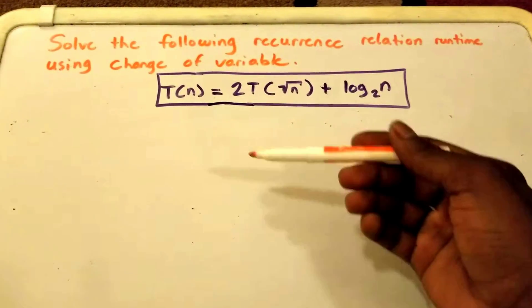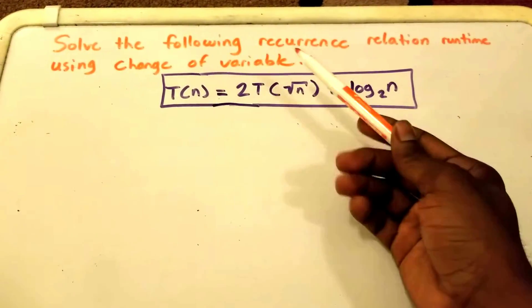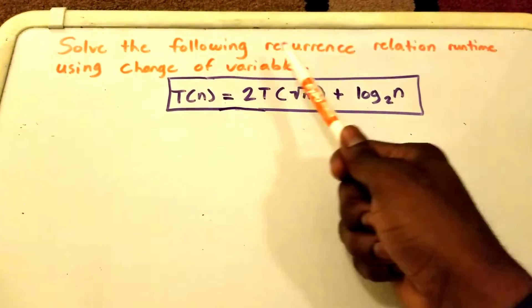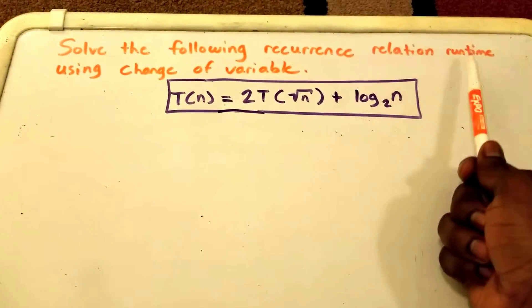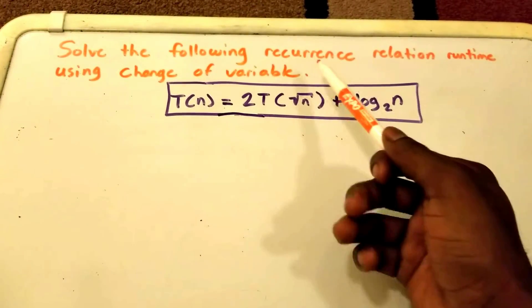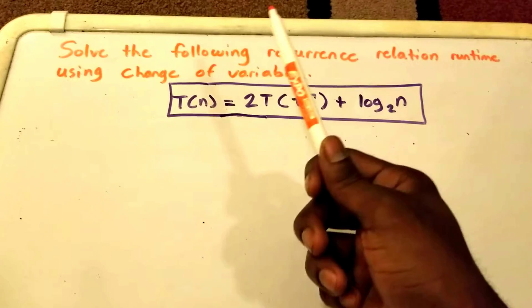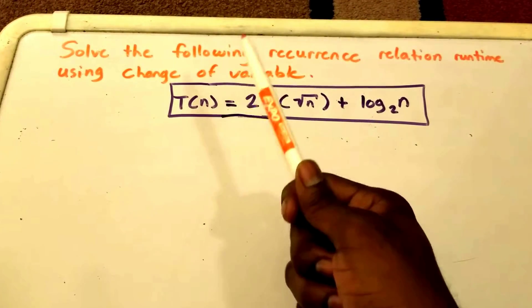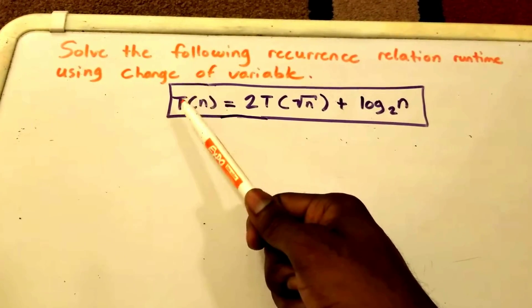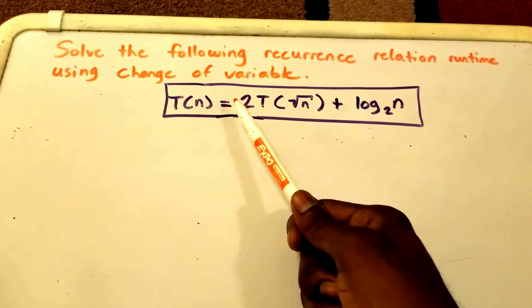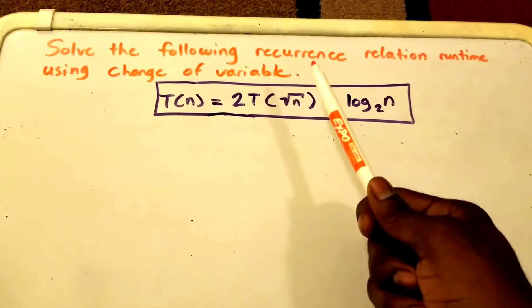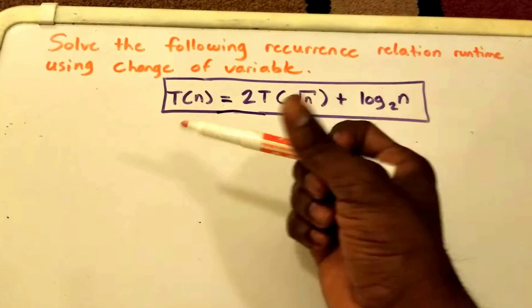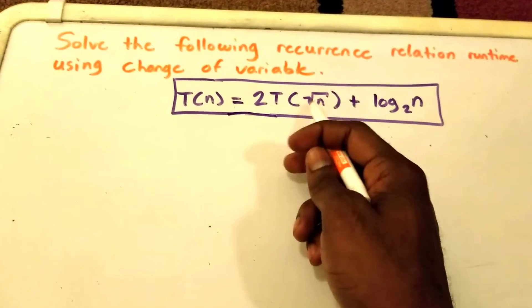Hey guys, welcome to this video on the change of variable method. Here we have our problem — we want to solve the following recurrence relation runtime using the change of variable method. In our purple rectangle we have our equation: T(n) = 2·T(√n) + log₂(n). First thing I want to do is get rid of that square root of n to make it look a little bit better.